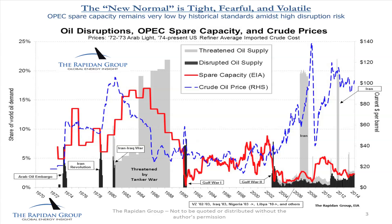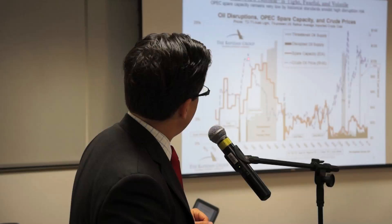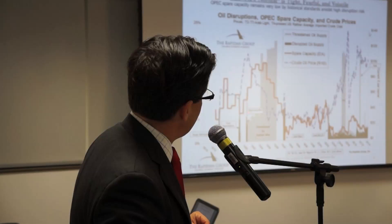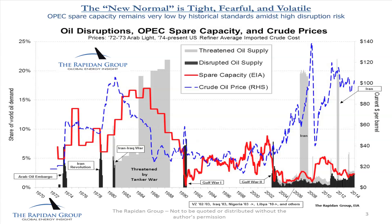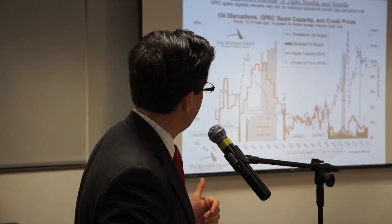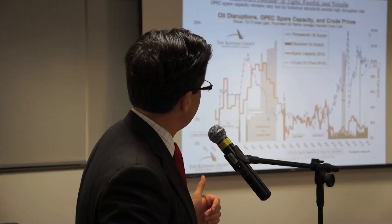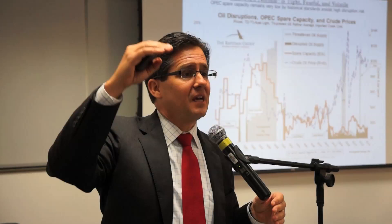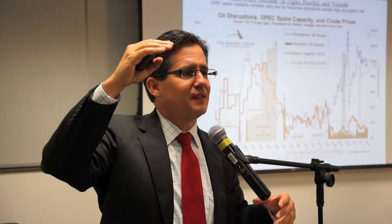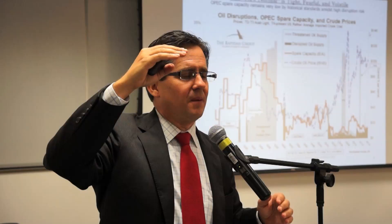This red line is the all-important spare production capacity — the key tool that OPEC, really Saudi Arabia, uses to ensure price stability. In the 1980s, it was a very turbulent, violent, and disruptive period. Major wars at the beginning and end, a tanker war in between — and yet the price of oil collapsed during all this war. How could we have all this conflict and have the price of oil collapse? I think it has something to do with this red line — spare production capacity was very high. Spare capacity is like the insurance for the market, the fire patrol, the buffer against instability. It was high because Saudi production went very, very low.